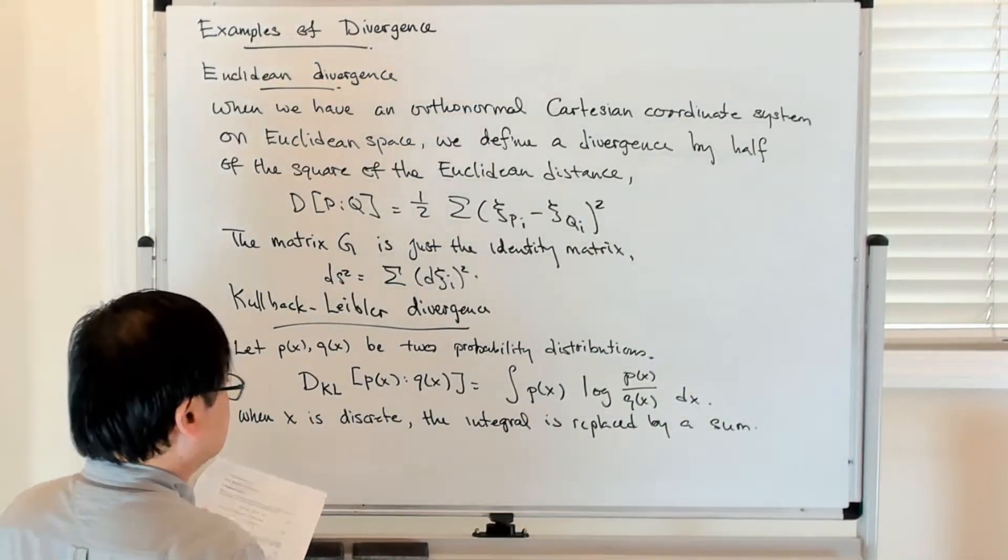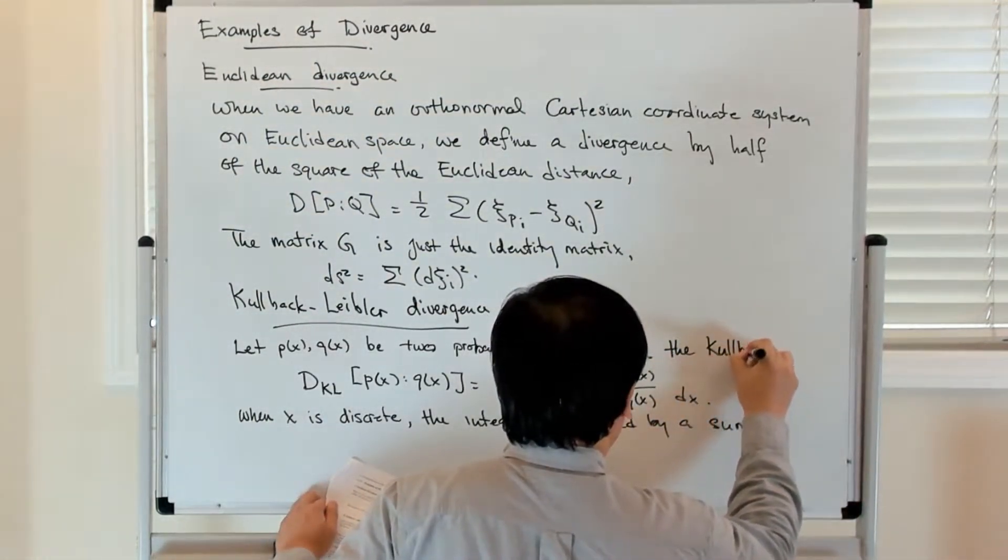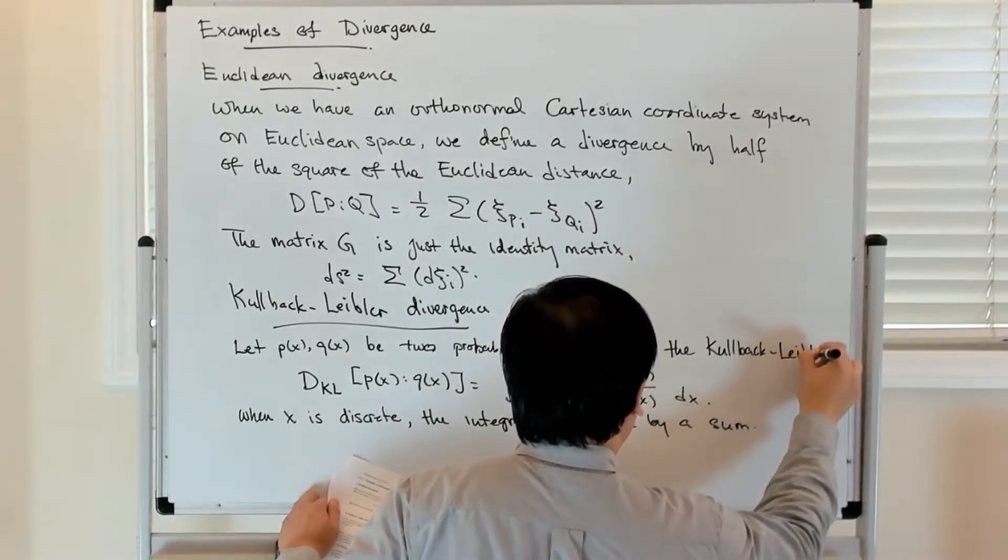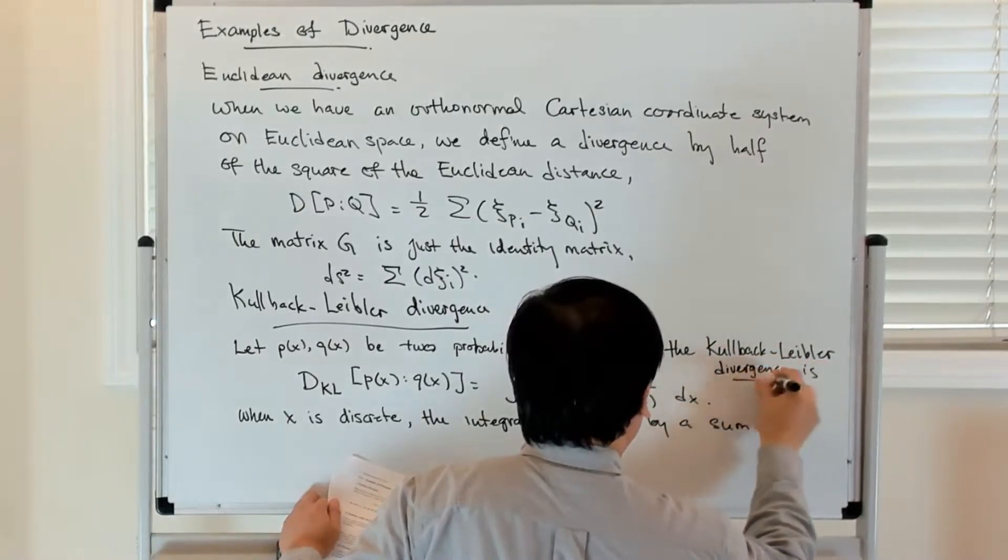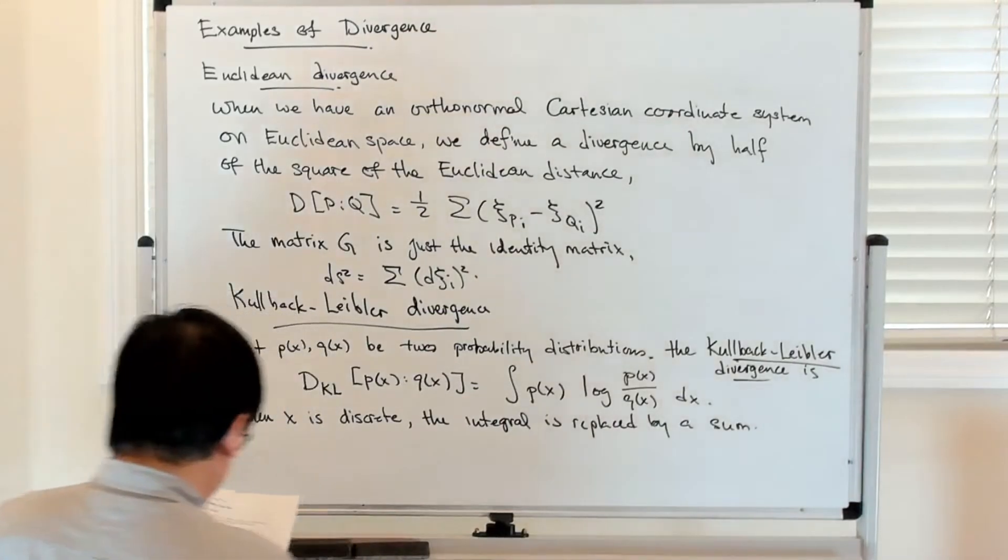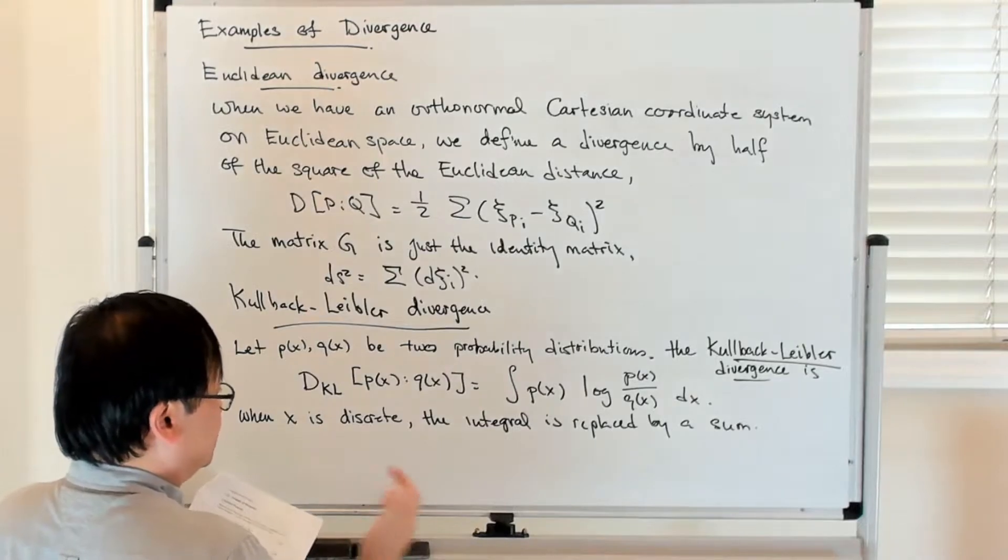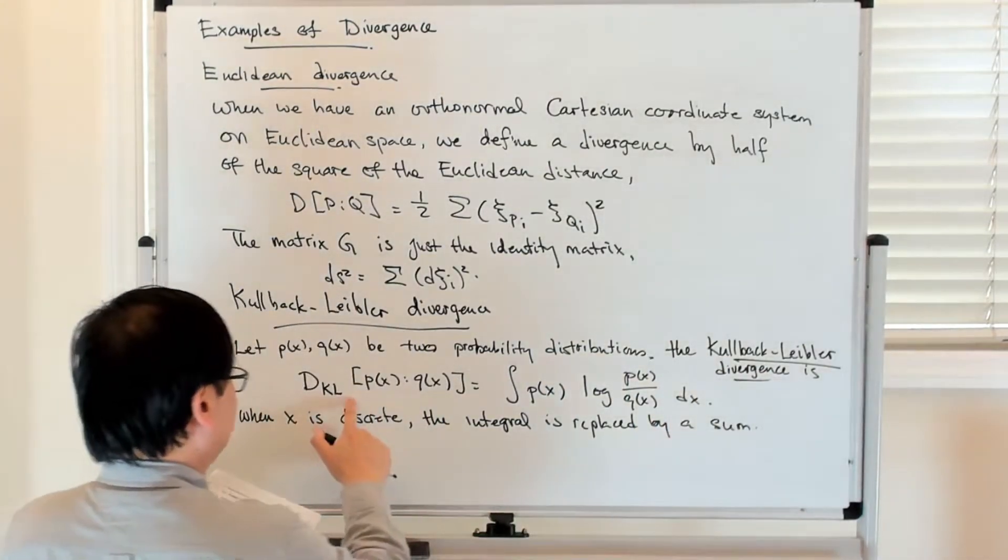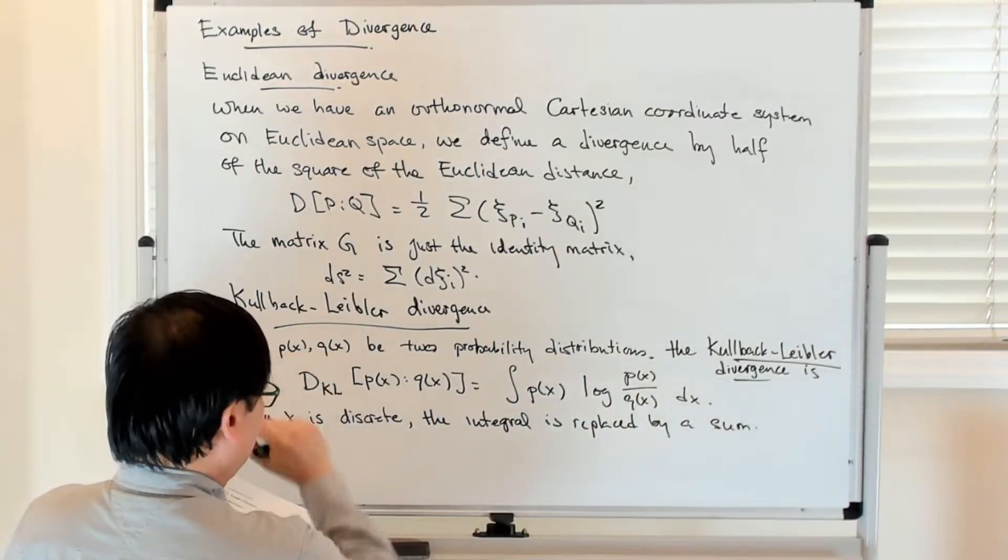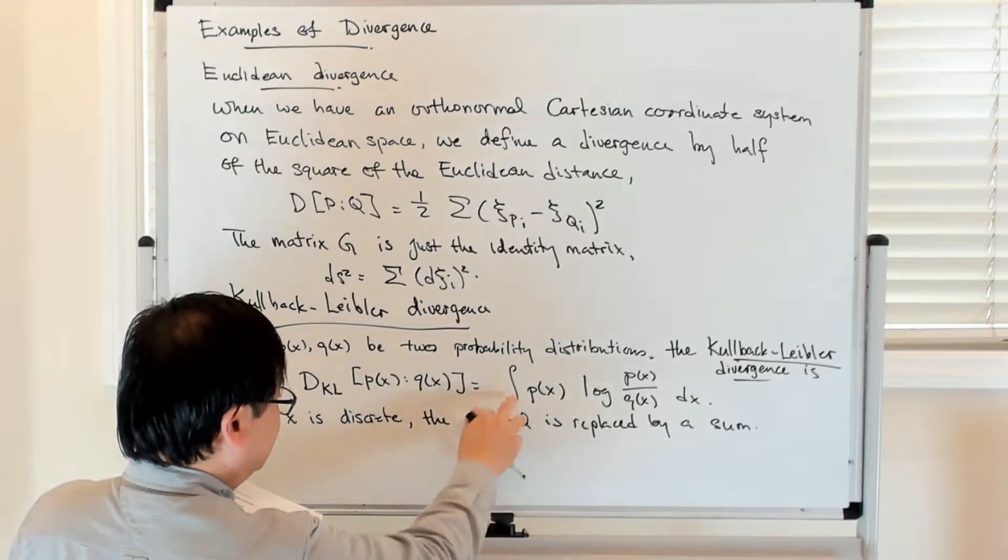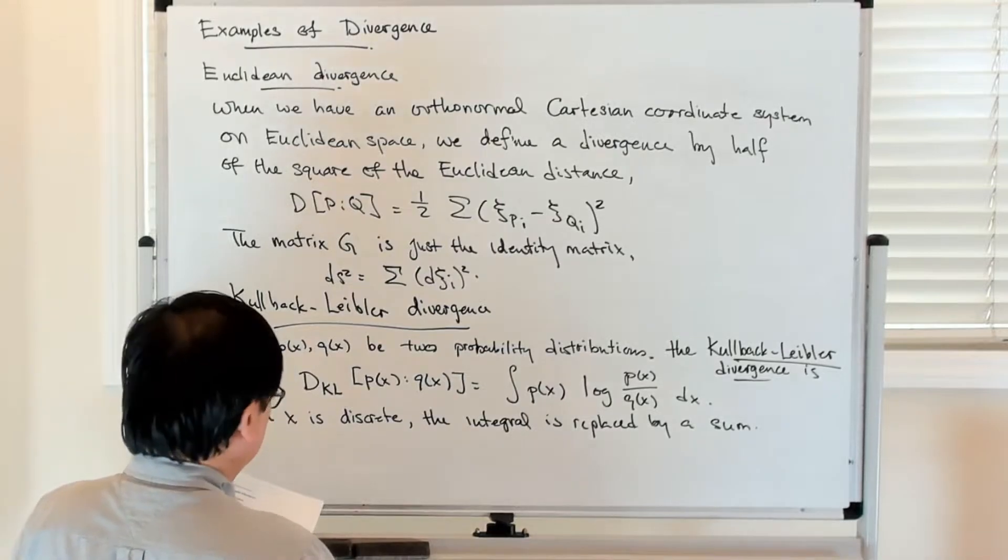When we have P and Q, which are two probability distributions on some statistical manifold, then this Kullback-Leibler divergence is given by this expression. And if the random variable is discrete as opposed to continuous, then this integral in the definition gets replaced by a sum. You can check that it satisfies the properties of a divergence function.